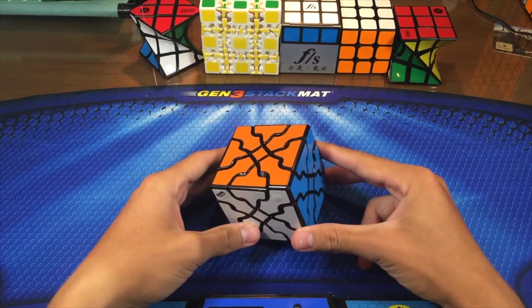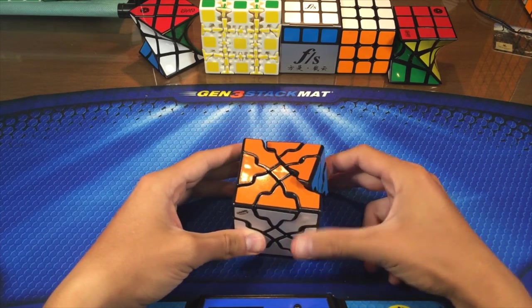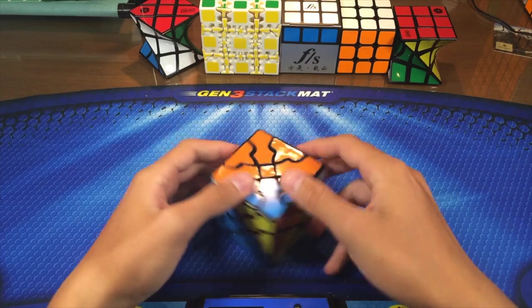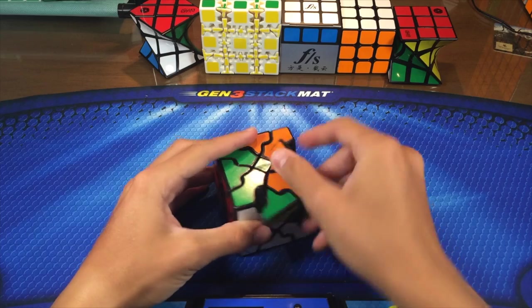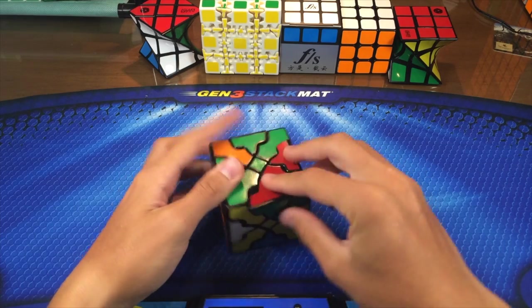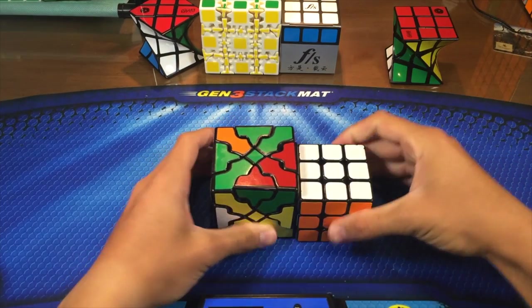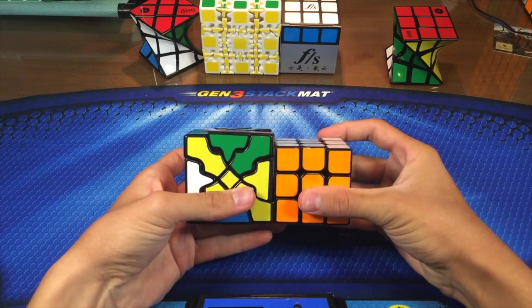A curvy dino. Dino cubes are extremely easy. So this dino, I'll just scramble it here. The turning is really nice. Like no problems after these first turns. The size, here's my Hualong. It's a tiny bit bigger.